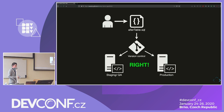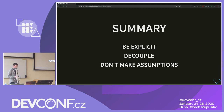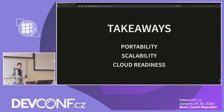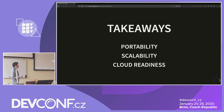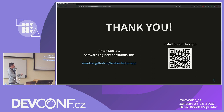Those are the 12 factors. Even if you don't find value in them as strictly defined, the key takeaways are: be as explicit as possible, be as decoupled as possible, and don't make assumptions. If you do this, it will give you portability — you'll be able to run your application everywhere without being locked into a cloud or service provider. It will give you scalability — you'll be ready to scale when you need to. My name is Anton Sankov, thank you very much, and don't forget to install our GitHub app.